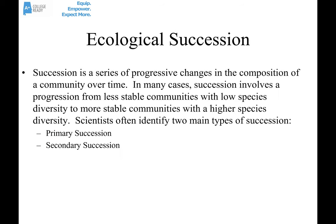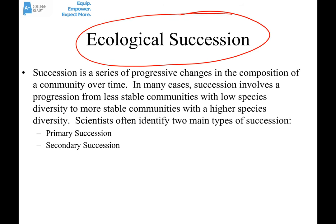The last topic in this screencast is ecological succession. Succession is a series of progressive changes in the composition of a community over time. In many cases it involves a progression from less stable, less diverse communities to more stable communities with much higher species diversity. There are two kinds: primary succession and secondary succession.